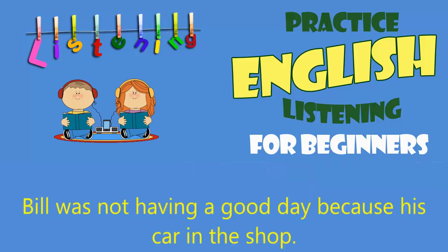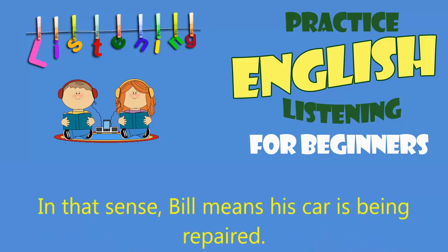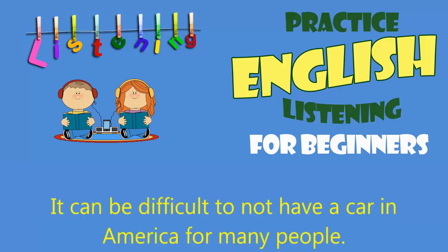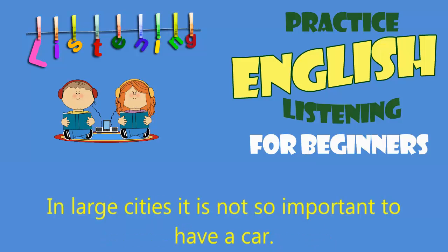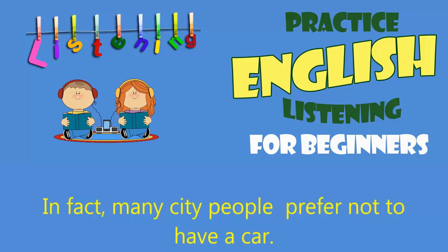Monologue. Bill was not having a good day because his car was in the shop. A shop can mean a store, but it originally meant a place to make or repair things. In that sense, Bill means his car is being repaired. It can be difficult to not have a car in America for many people. In large cities, it is not so important to have a car. In cities, public transportation, such as buses, is available for people to use. In fact, many city people prefer not to have a car.